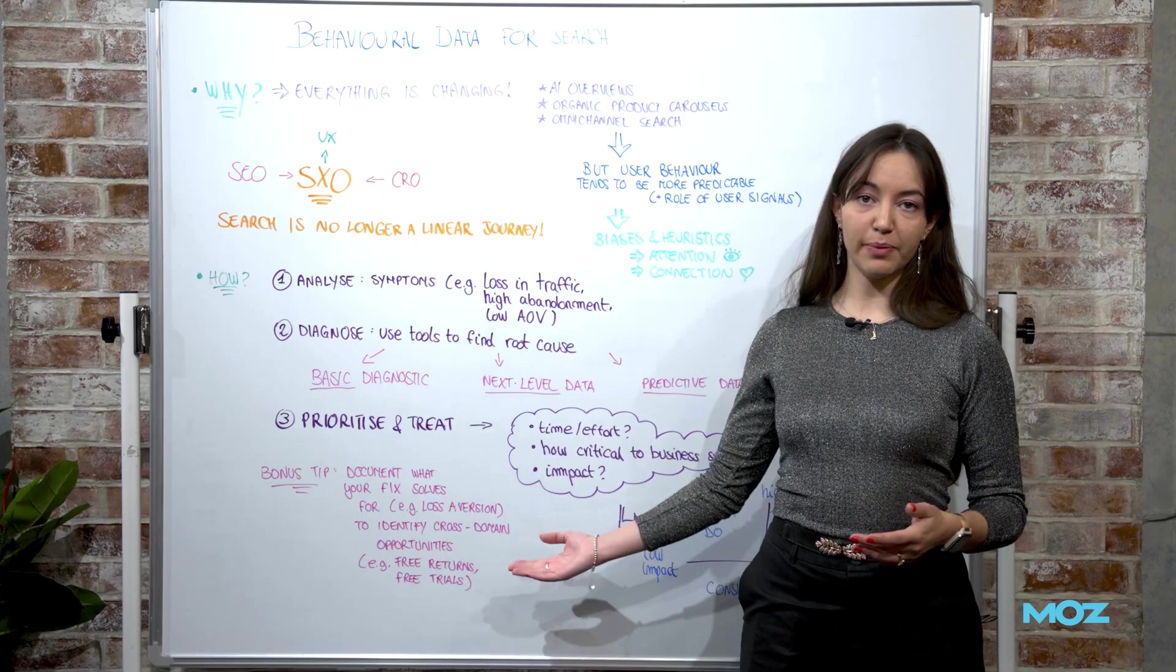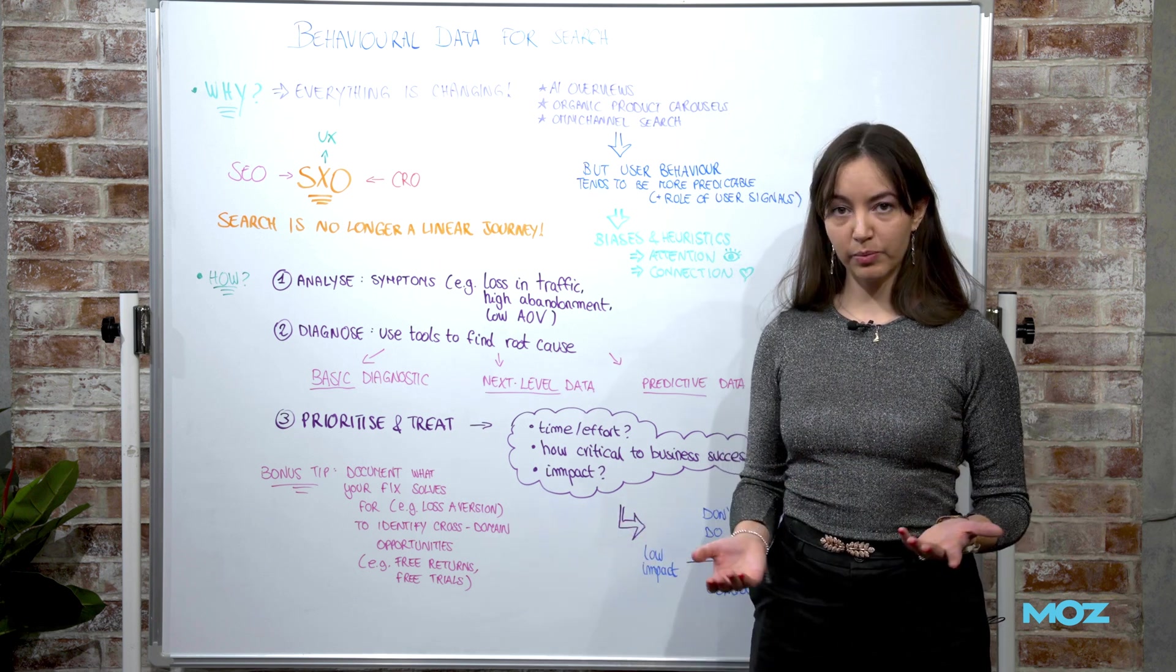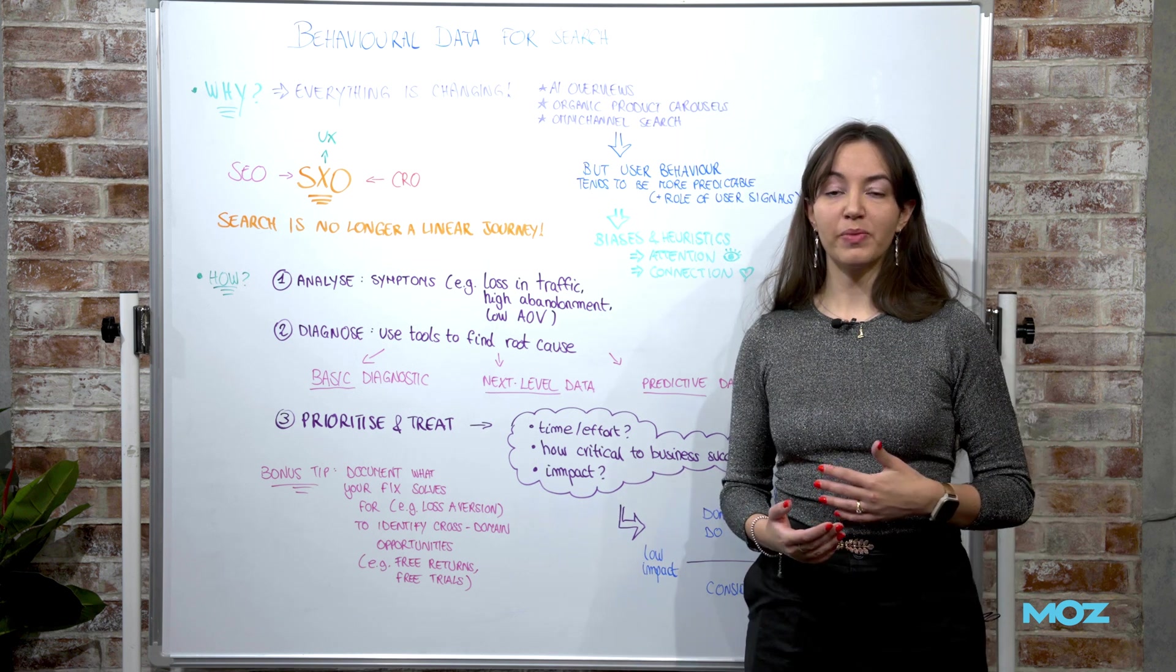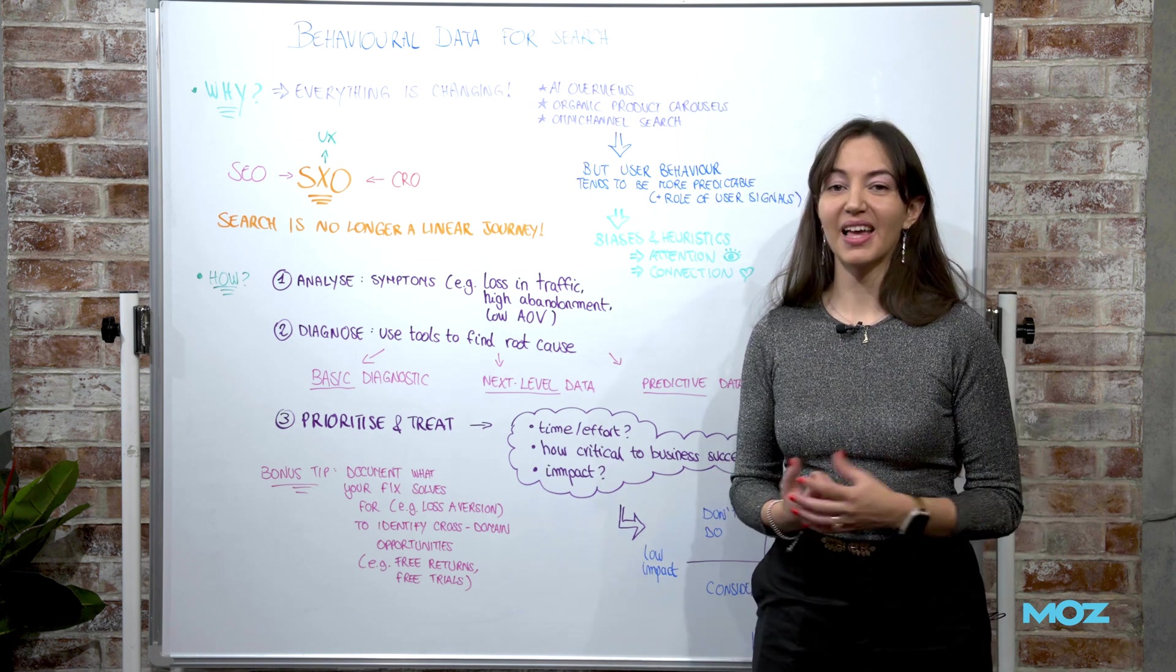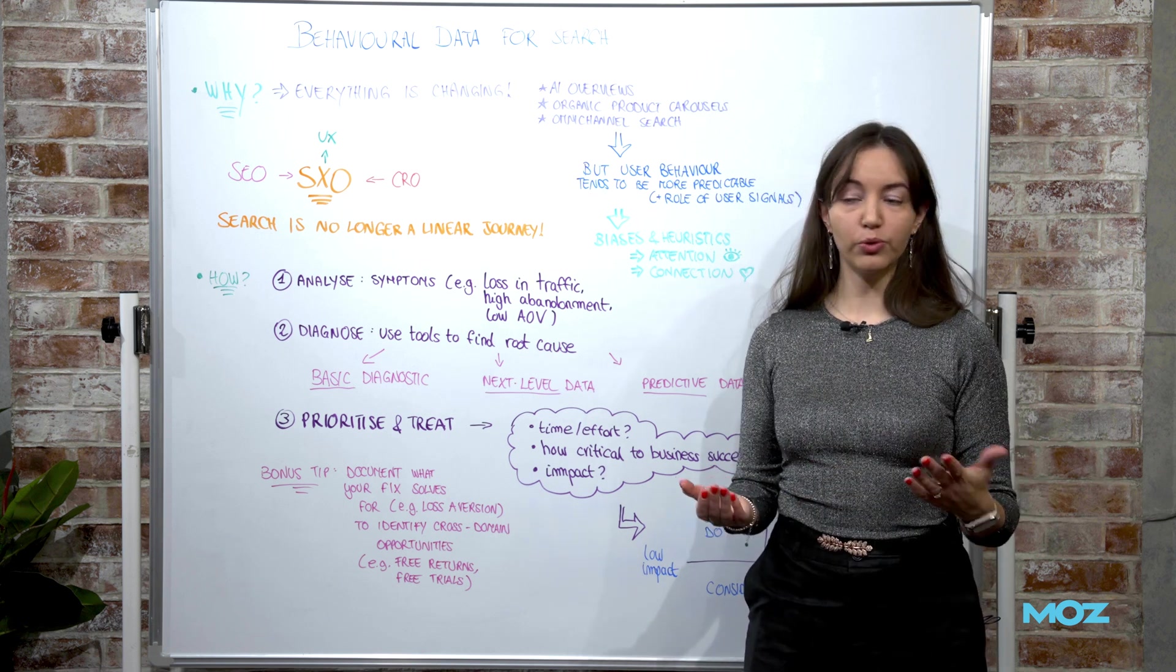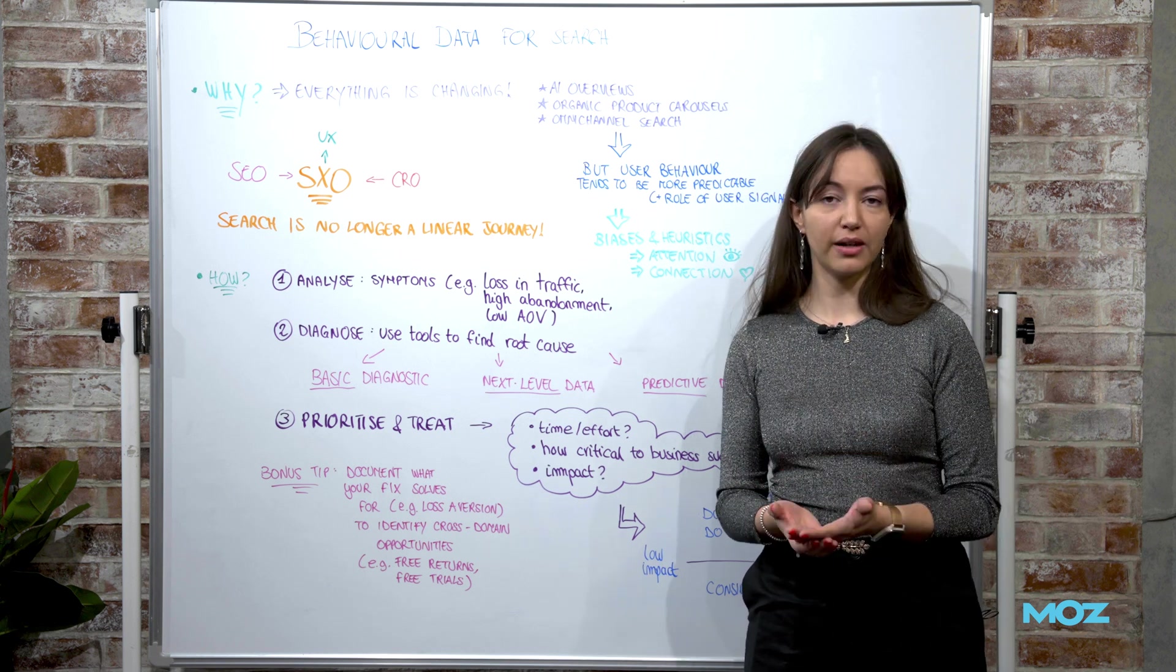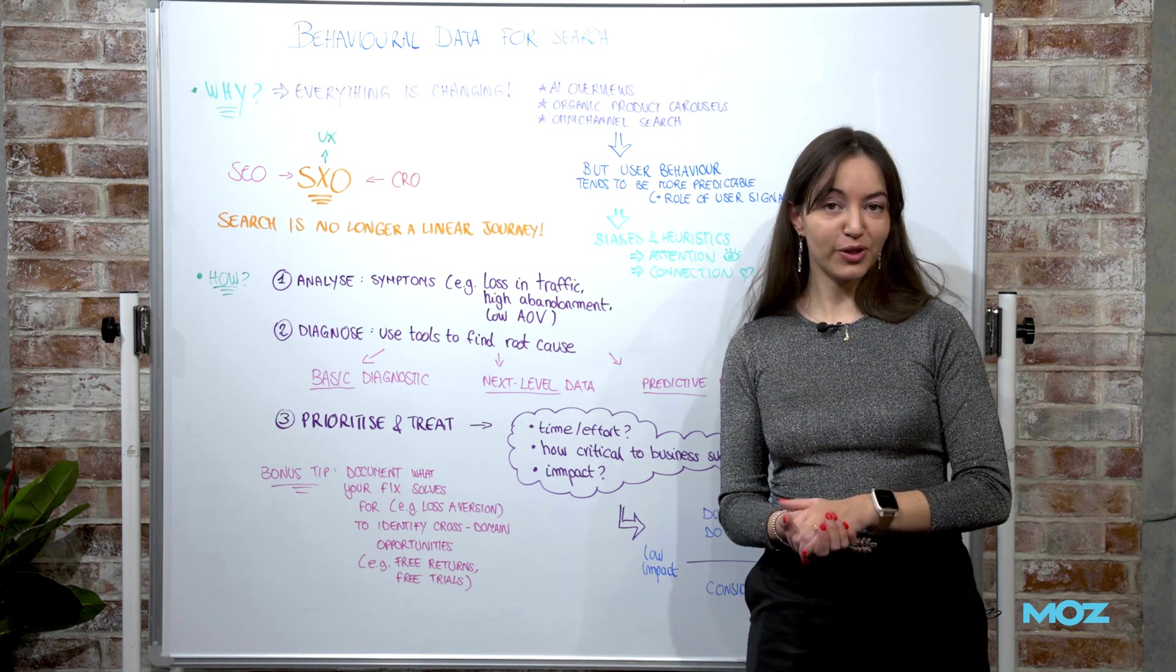For example, if I see that people are looking for returns and I optimize for them to make them more available on page and off page, that means that I am optimizing for loss aversion. People do not want to lose. So that can be applied to a number of other domains on site. I can, for example, if I have a tool, I can offer a free trial or a free sign up with no credit card required, which helps us save time and money from a user perspective.